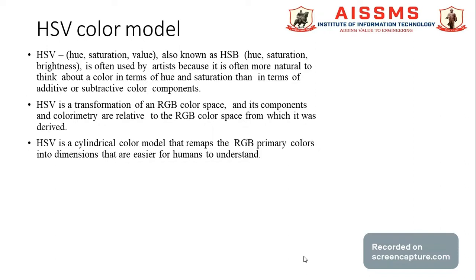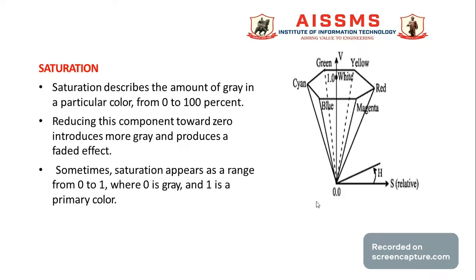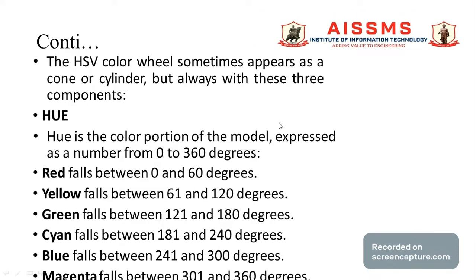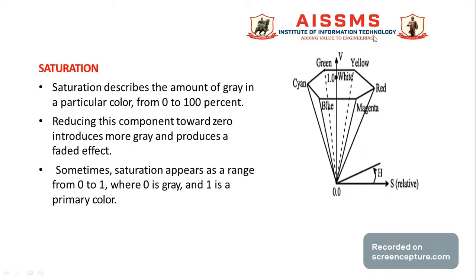HSV is a cylindrical color model that remaps the RGB primary colors into dimensions that are easier for humans to understand. This cylindrical form is created for the HSV color model. The HSV color space sometimes appears as a cone or a cylinder.